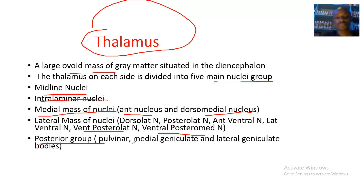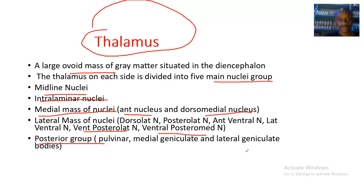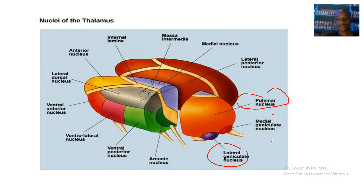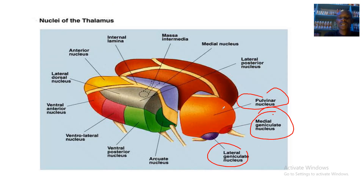The posterior group is composed of the pulvinar, the medial geniculate, and the lateral geniculate bodies. This is the pulvinar, medial geniculate, and lateral geniculate. This is the posterior group.